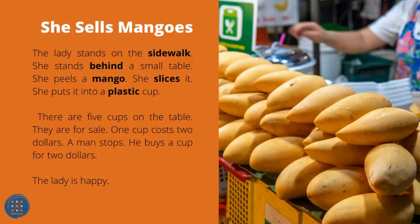She Sells Mangoes. The lady stands on the sidewalk, behind a small table. She peels a mango, slices it, and puts it into a plastic cup. There are five cups on the table — they are for sale. One cup costs $2. A man stops and buys a cup for $2. The lady is happy.